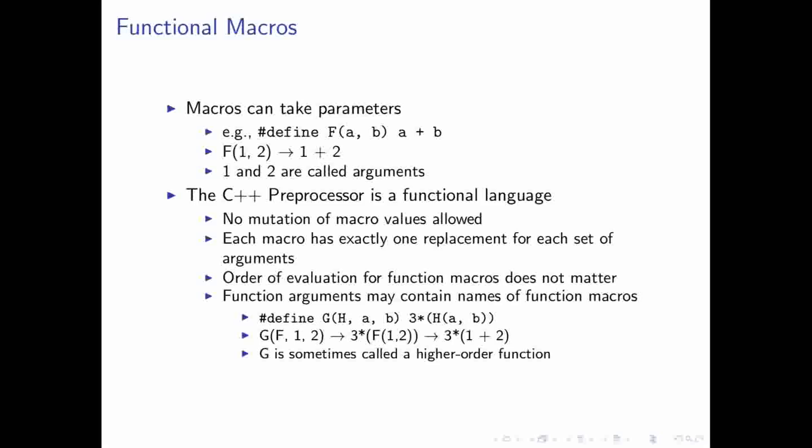So, as I just mentioned, we have functional macros. And these are macros that take parameters. And so, for instance, you can have a function macro f that takes parameters a and b. And what basically happens is that internally these get replaced, a and b get replaced with the parameters that you pass into the functional macro. And so, here, if we pass in 1 and 2 to f, you can see that the result would be 1 plus 2. Because in the definition, it's a plus b. And a and b get replaced with 1 and 2.